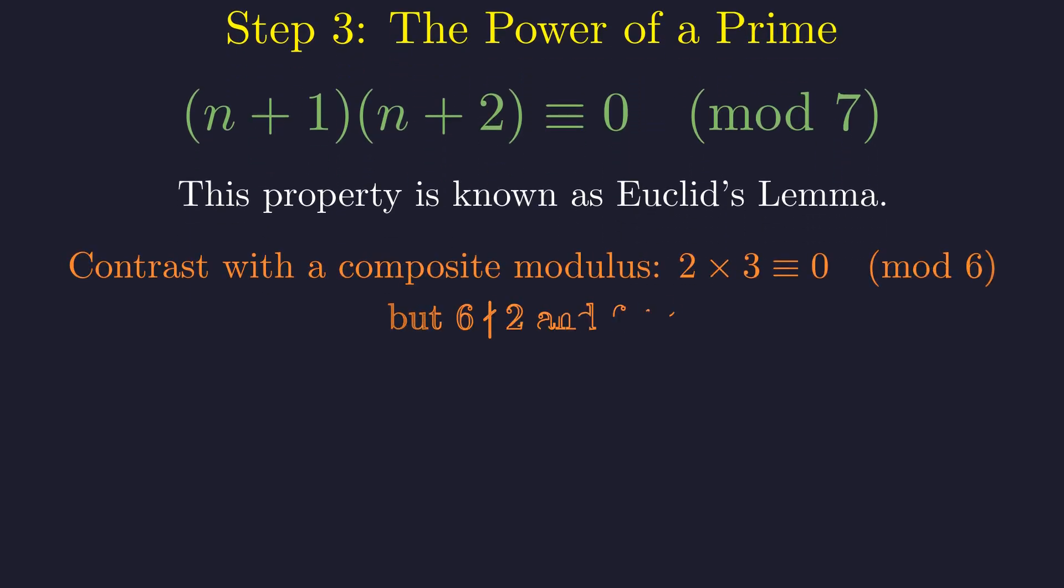To see why primality is essential, consider a composite modulus like 6. 2 times 3 is divisible by 6, yet 6 divides neither 2 nor 3. The logic would fail.